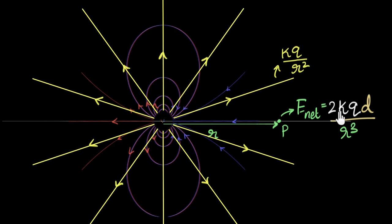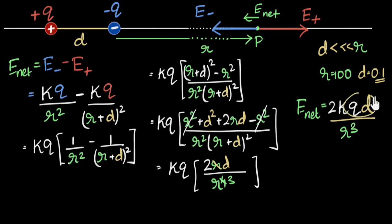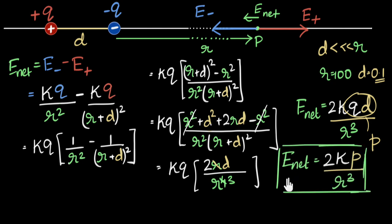The second major difference: the radial field depends only on the total charge, but the dipole field depends on the product of the charge and the distance between them — Q times D. If you doubled the separation but halved the charge, the product stays the same, and from far away it feels like the same dipole. So the strength of the dipole is determined by this product, which is given the name dipole moment, represented by P. Finally, the electric field on the axis is 2KP divided by R cubed.